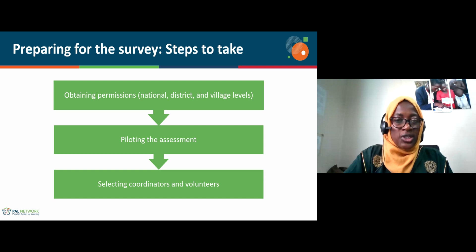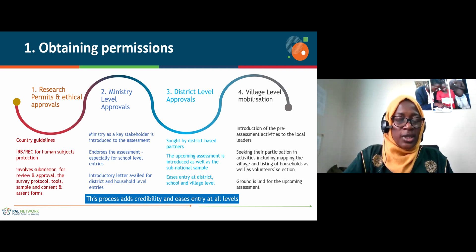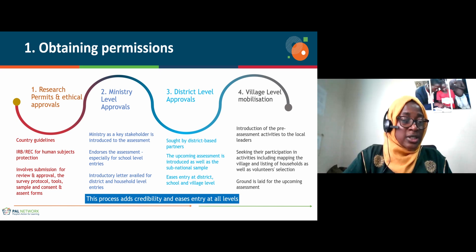Gaining insights into how we obtain permissions is done at four different levels. The first is at the national level, where we seek research permits and ethical approvals, following the country guidelines for conducting research and surveys. We submit protocols for the assessment that detail how we shall conduct it, the sample, as well as the tools, and have these submitted to respective IRBs as well as to the National Council for Science and Technology that sanctions all researchers in the country.